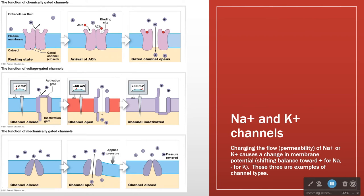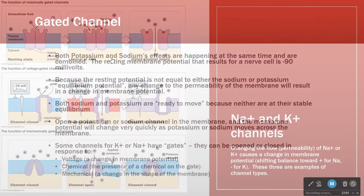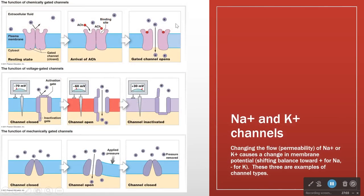To put this in context: a neurotransmitter — acetylcholine — opens a chemically gated channel, causing some sodium to come in. That sodium coming in then triggers the opening of more voltage-gated channels. Now oodles and oodles of sodium are coming rushing in. As they do, the membrane potential gets higher and higher.